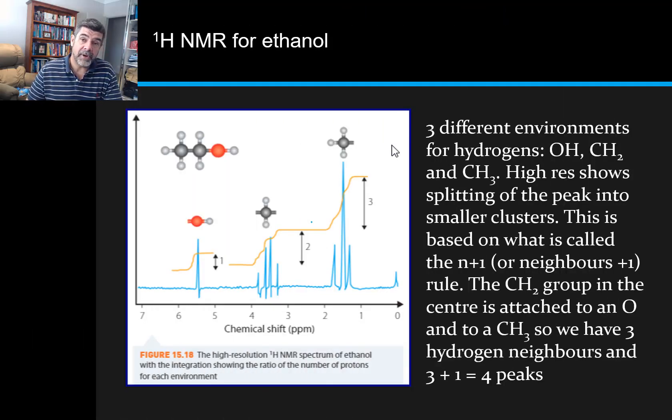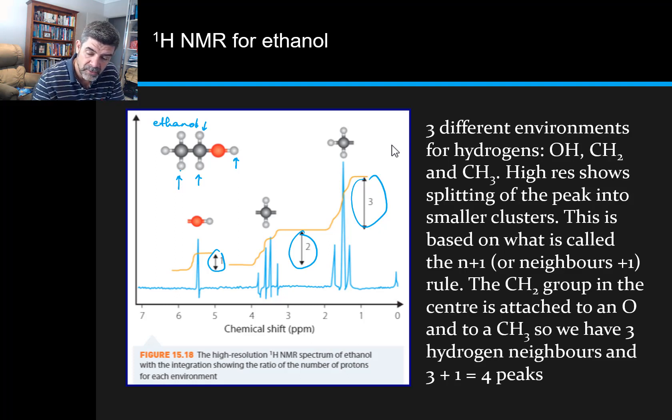You can see what's happening here is we have three different environments for the hydrogen. As a result of that, this is starting to give us a little bit more information, particularly around our potential symmetries of different molecules that we can identify for ethanol. We already know that we're looking at ethanol. We can see that the three different environments are a hydrogen that is attached to an oxygen, a hydrogen that is attached to a carbon which is also attached to one other hydrogen, and a hydrogen that's attached to a carbon that has two other hydrogens. So effectively, we have a CH3 group, a CH2 group, and an OH group.